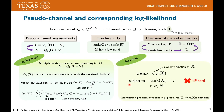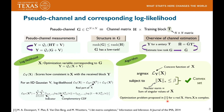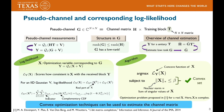A natural approach to estimating the pseudo-channel is to maximize the log-likelihood function L_Y subject to a low-rank constraint on X. Unfortunately, this low-rank constraint results in an NP-hard optimization problem. Prior work has relaxed this low-rank constraint into a nuclear norm-based constraint for tractability. An interesting observation is that the log-likelihood function is concave in X, while the nuclear norm constraint set is convex. This allows the use of standard convex optimization tools to solve the pseudo-channel estimation problem.